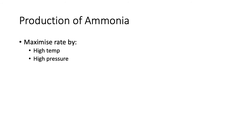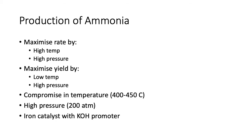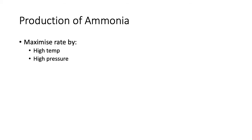They maximize rate by using a high temperature and high pressure — remember your Year 11 rate concepts. To maximize yield, you use a low temperature and high pressure. Therefore, we use a compromise temperature of around 400 to 450 degrees Celsius, a high pressure of around 200 atmospheres (about 220,000 kilopascals), and an iron catalyst with a potassium hydroxide promoter. You need to distinguish whether you're maximizing rate or yield and discuss the compromise.